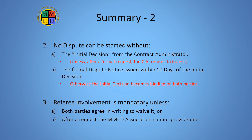2. No dispute can be started without A. The initial decision from the contract administrator, unless after a formal request the CA refuses to issue it. And B. The formal dispute notice issued within 10 days of the initial decision. Otherwise, the initial decision becomes binding on both parties and unappealable.